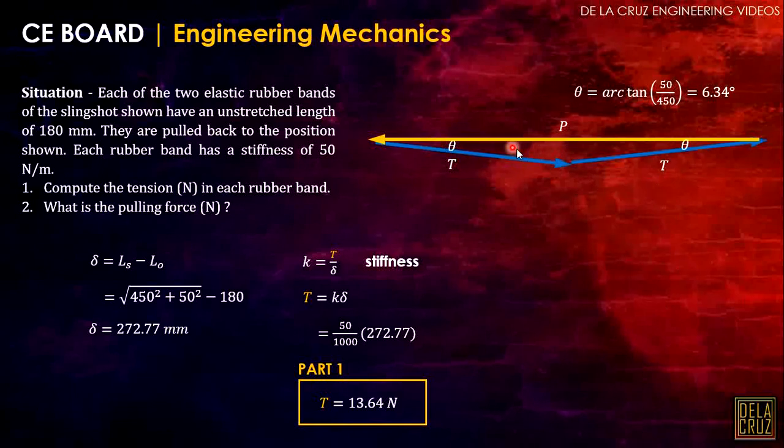If this is angle theta and we have this triangle, the remaining angle is 180 minus 2 theta, or 167.32 degrees. As you can see, we have the value of T, and the unknown is P. By sine law, P over the sine of the opposite angle, which is 167.32, equals T divided by sine of the opposite angle theta.